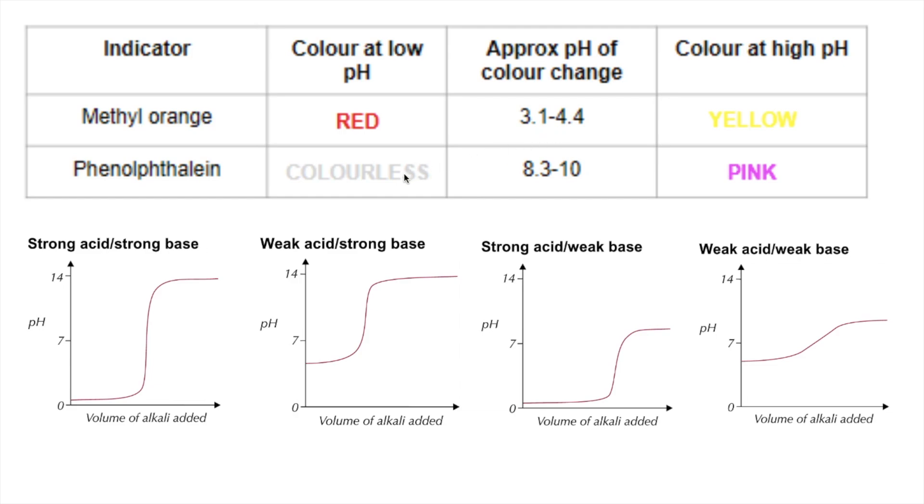Phenolphthalein, you can see it's two colours, and its pH range is 8.3 to 10. If we add the pH ranges to the curves, methyl orange is going to be about there, and phenolphthalein is going to be about there.